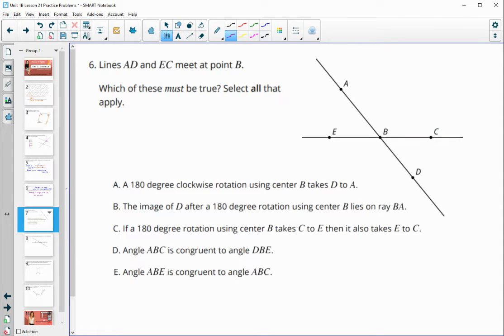Number six, lines AD and EC meet at point B. What must be true? And so this says a 180 degree clockwise rotation will take D onto A. So the only way that we know, so it will certainly take D over here. But we don't know if it will land specifically on A unless we know that the segment BD and the segment AB are the same length. So this is not necessarily true.